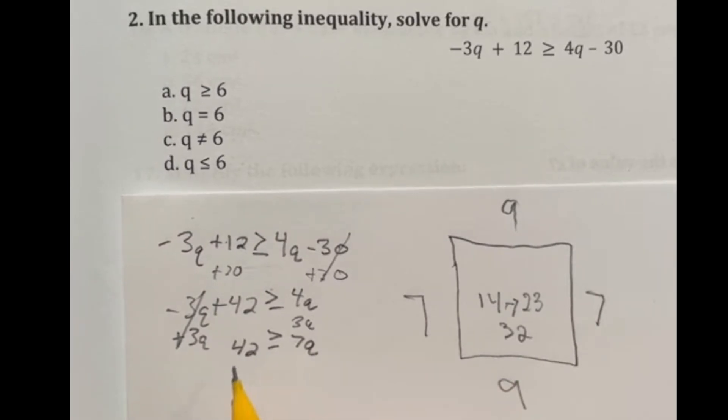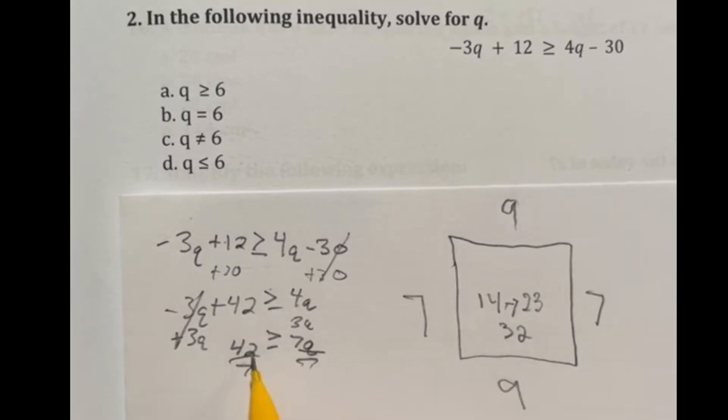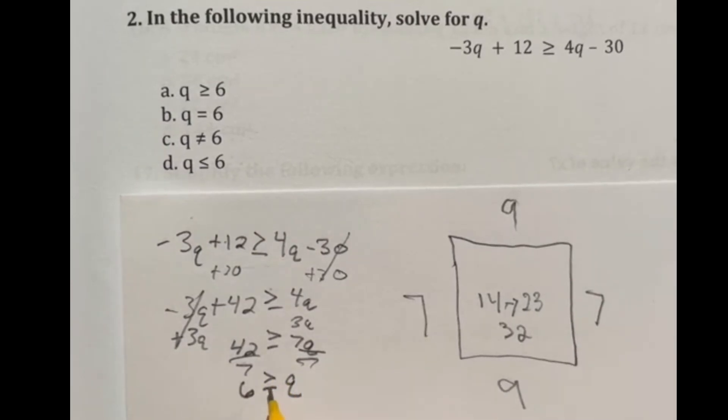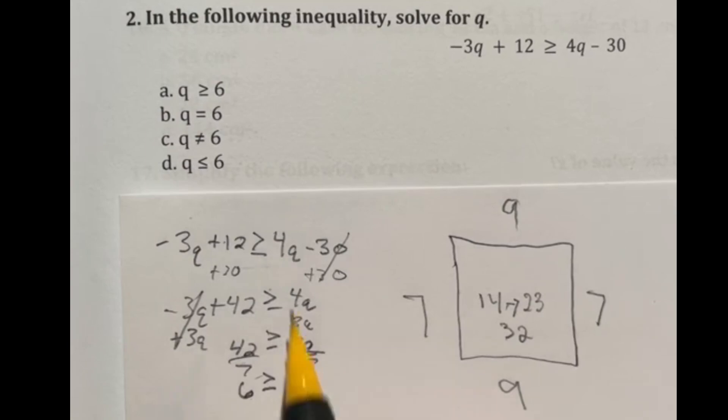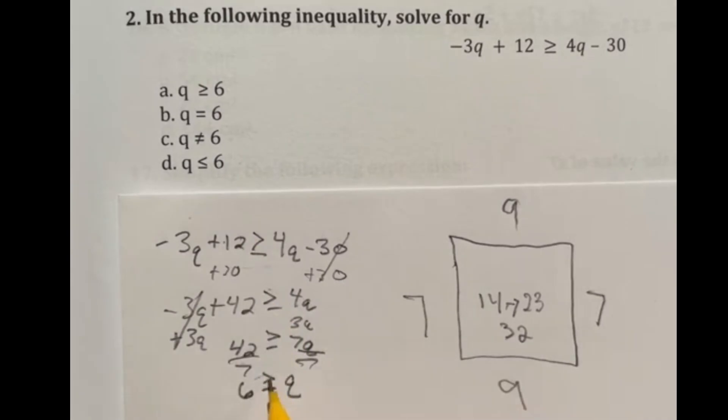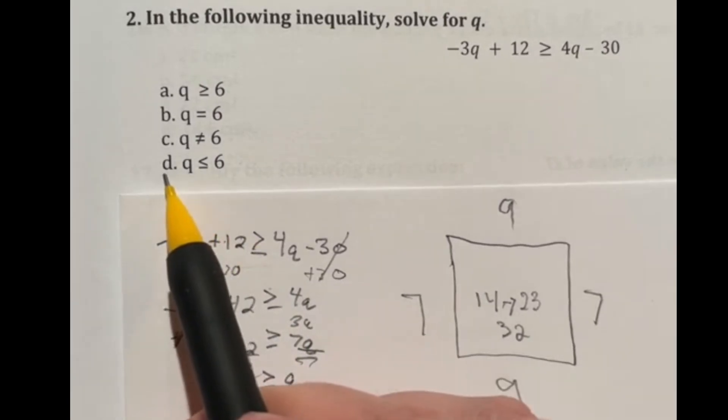And that's going to cancel these out over here, giving us that 42 ≥ 7q. And then last but not least, we're going to divide both sides by 7. And that's going to give me 6 ≥ q. Now here's the deal. When do you switch the sign? You only switch the direction of this sign if you are dealing with dividing or multiplying by negative numbers. Now we divided by a positive number, so we don't have to worry about that here. So our final answer is that 6 is bigger than or equal to q. So when I'm looking through these options, which one says 6 is the larger one, meaning the open side is facing that? It looks like our answer here is D.